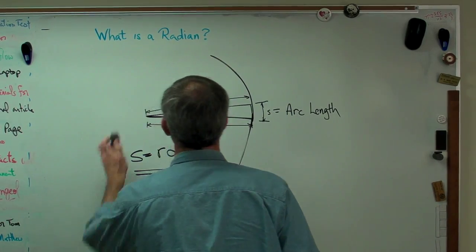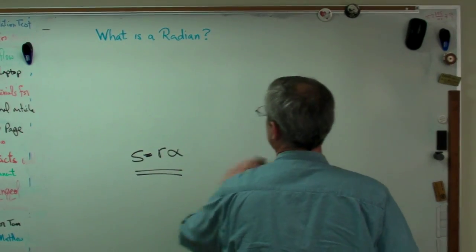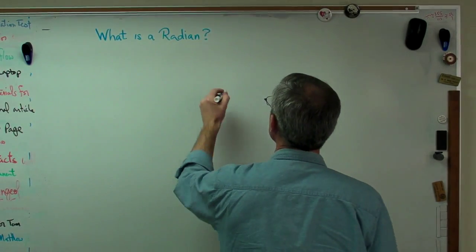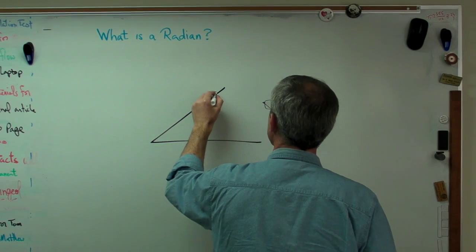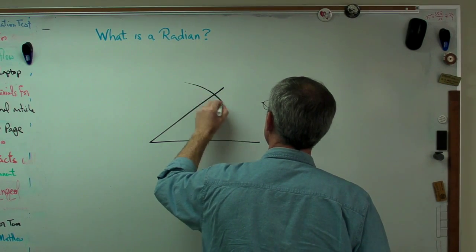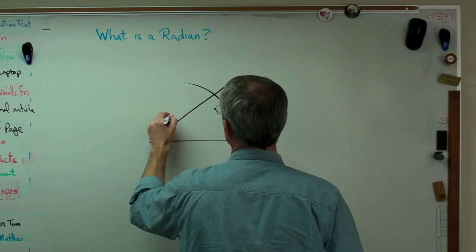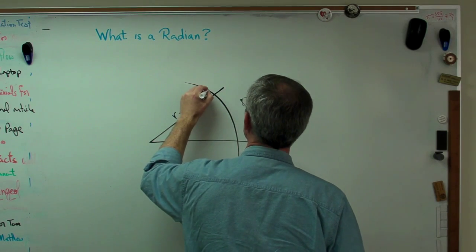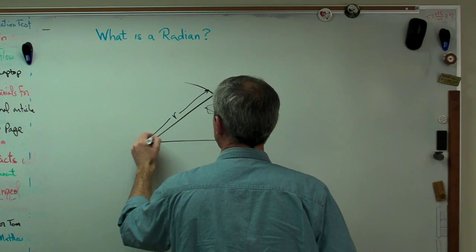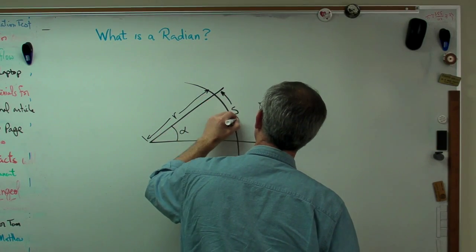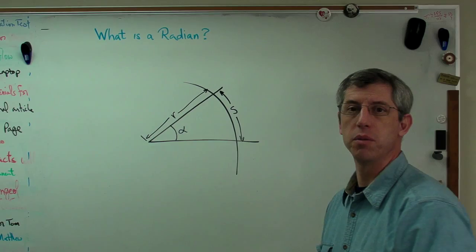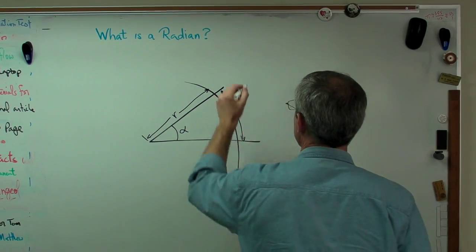What if we have an arc that's larger and it's also part of a circle? Same properties as before, same definitions as before, and we'll write the same equation.